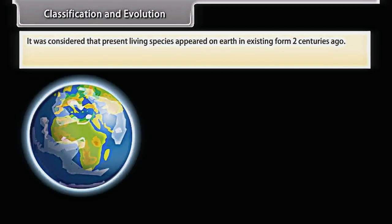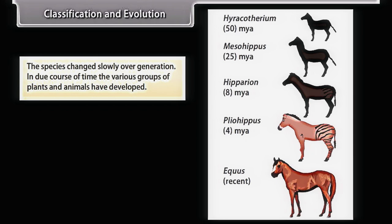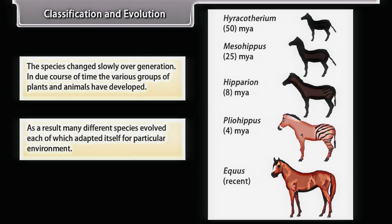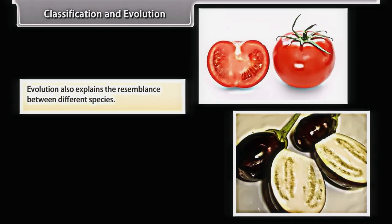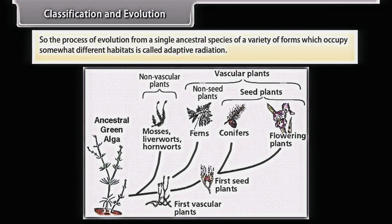Present living species appeared on earth in existing form only two centuries ago. The origin and diversity of species have been explained on the basis of evolution — species changed slowly over generations. In due course of time, various groups of plants and animals developed. Many different species evolved, each adapting itself to a particular environment. The process of evolution from a single ancestral species into a variety of forms occupying somewhat different habitats is called adaptive radiation.